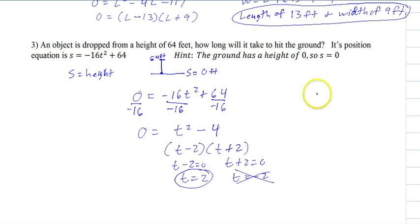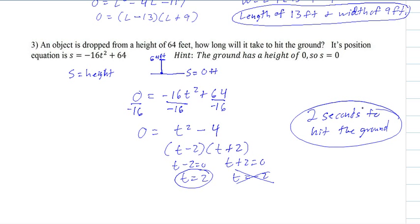2 what? Seconds. This is always going to be in seconds. So it takes 2 seconds to hit the ground. And that's it. So whenever they're asking you to find how long it takes to hit the ground, you make s equal to 0. Thank you.